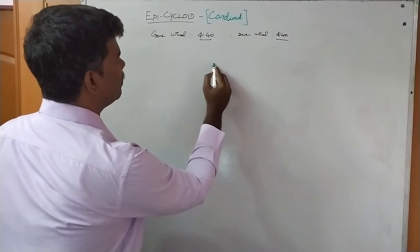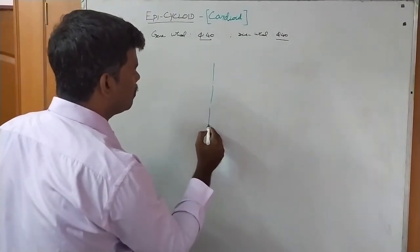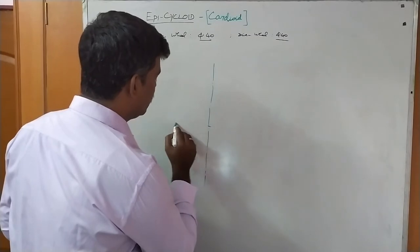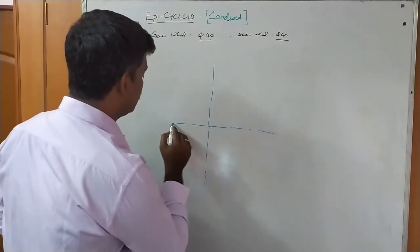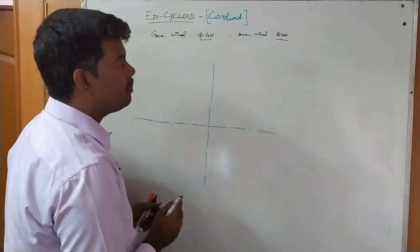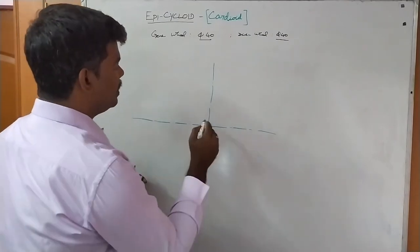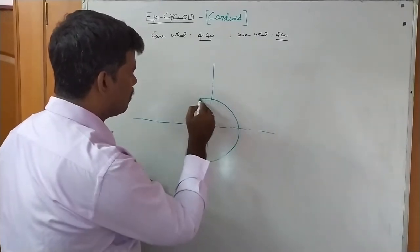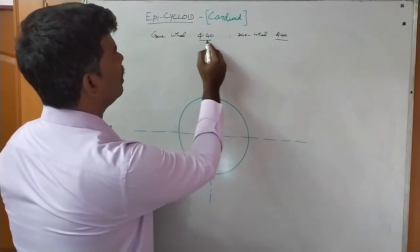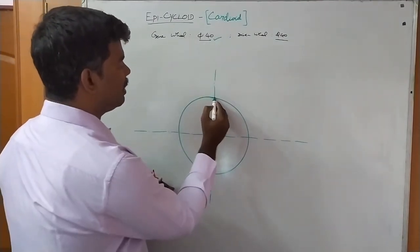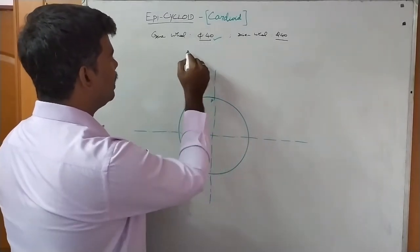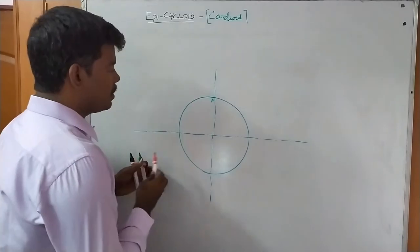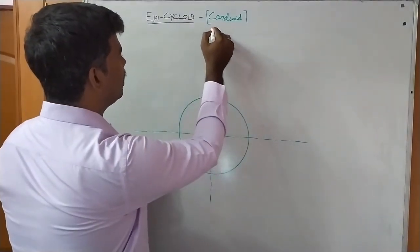First, draw one axis line — it can be inclined, horizontal, or at any angle. Then draw the directing wheel: dia 40, so take radius 20. Next, from the starting point of the directing wheel, draw the rolling wheel — also dia 40, same diameter.